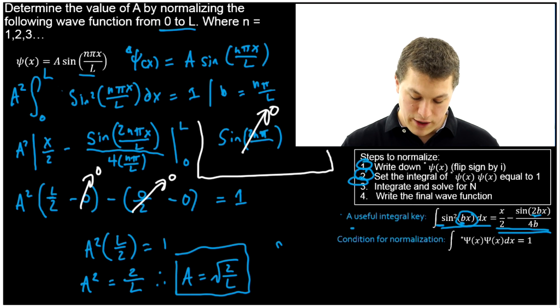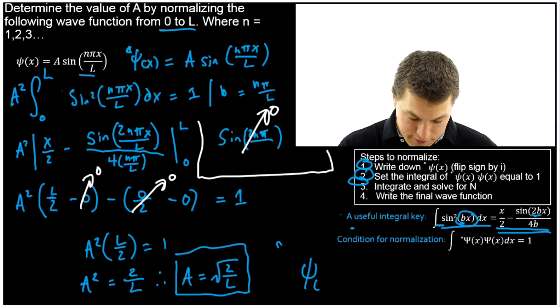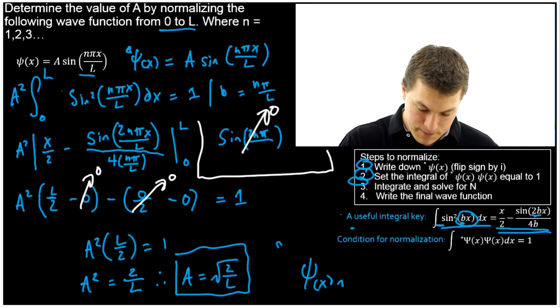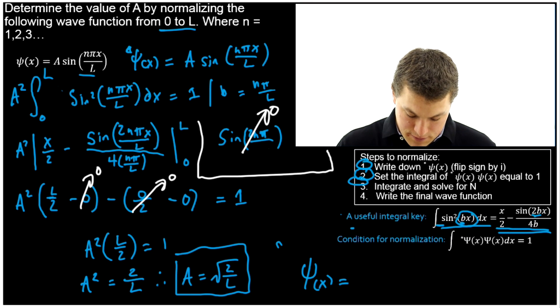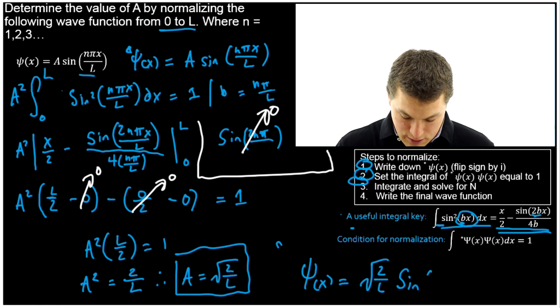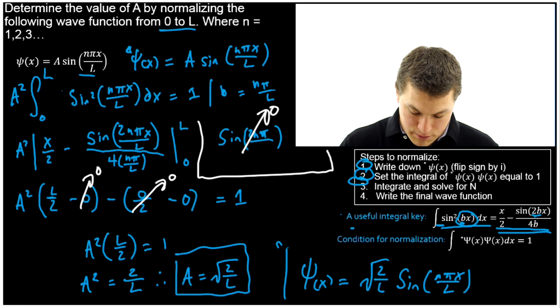What's our final wave function then? ψ(x), and all we got to do is plug in our new value that we've determined for A: square root of 2/L times sin(nπx/L). Boom. Done.